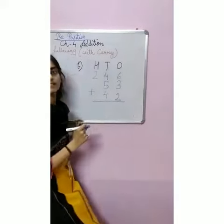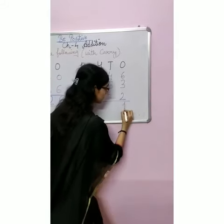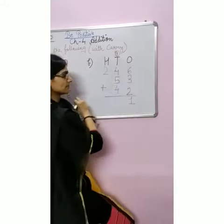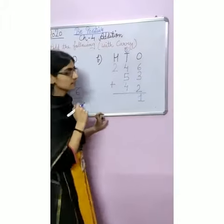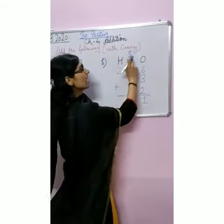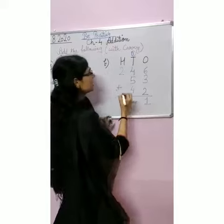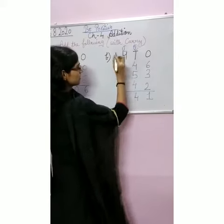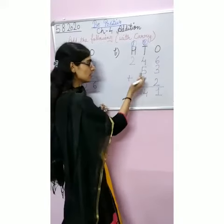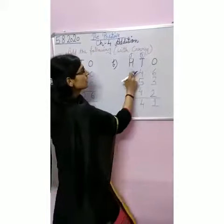Let's solve one more question. 6 plus 3 equals 9. 9 plus 2 equals 11. 1 will go as carry at the 10s place. 4 plus 5 equals 9. 9 plus 4 equals 13, and with 1, that's 14. And 1 will go as carry over here. 2 plus nothing — we assume 0 — and here also nothing at the 100s place, so 0. Then 2 plus 1 equals 3.